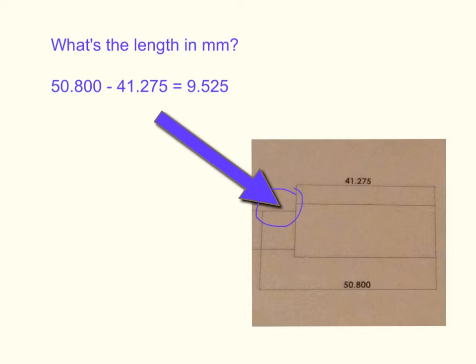Let's take this a step farther and say that we want to define the length in millimeters of this outside edge that it's pointing to here in the diagram. So we're going to subtract 50.800 millimeters minus 41.275 millimeters equals 9.525 millimeters, or the length of this small outside edge in the blueprint.